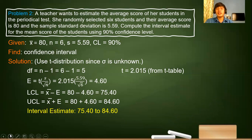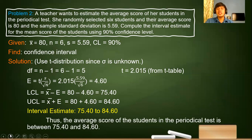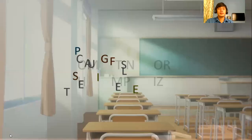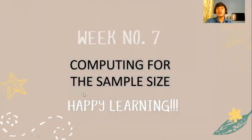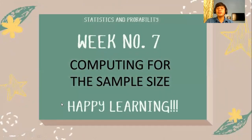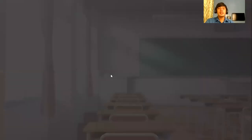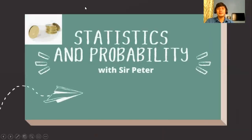So our interval estimate is 75.40 to 84.60. For a conclusion, the average score of students in the periodical test is between 75.4 and 84.60. That ends our discussion for the T distribution. For the last video lesson, we will talk about how to compute the sample size of a population. Again, this is Sir Peter, your statistics and probability teacher.